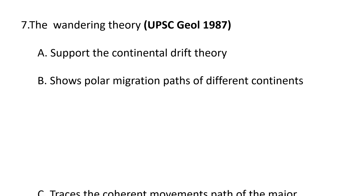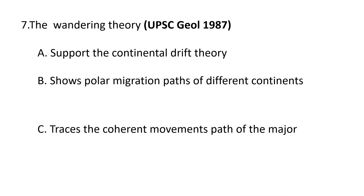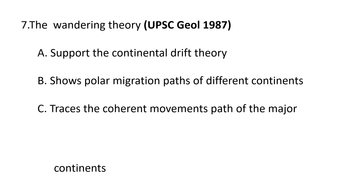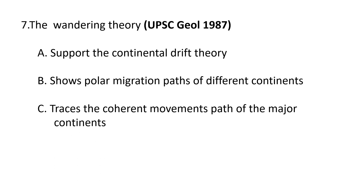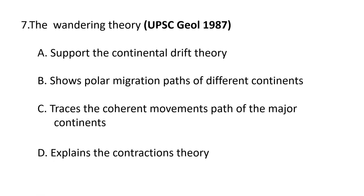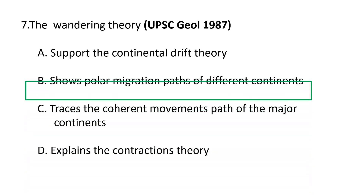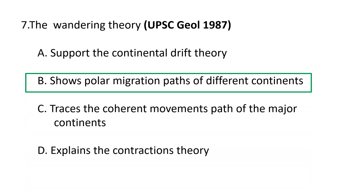Seventh question answer: it shows the polar migration paths of different continents, and traces the coherent movement path of the major continents, and explains the contraction theory. The correct answer is b) it shows the polar migration paths of different continents.